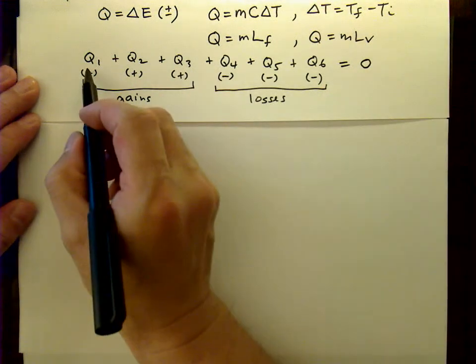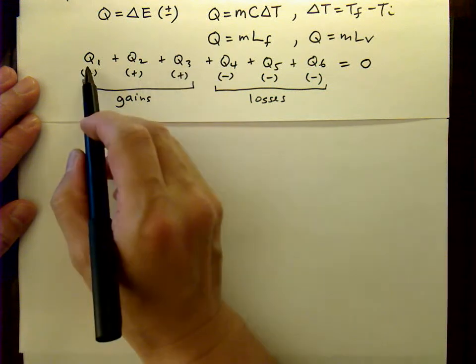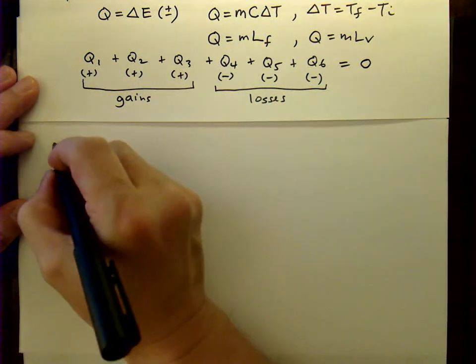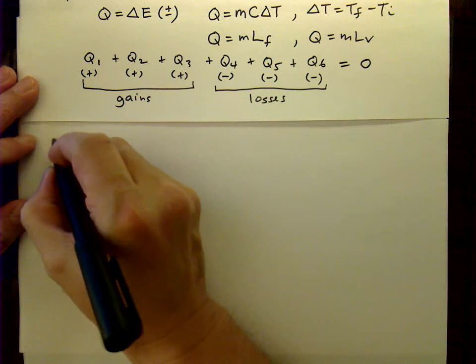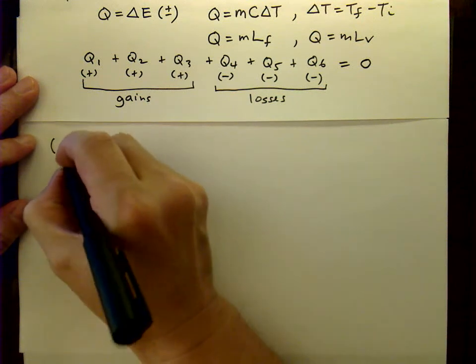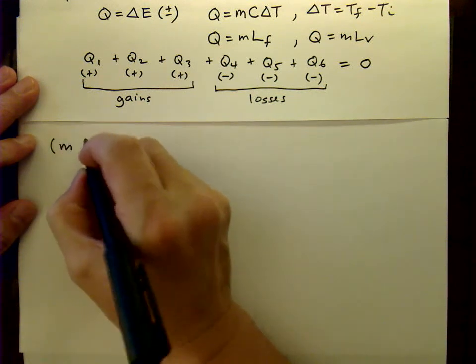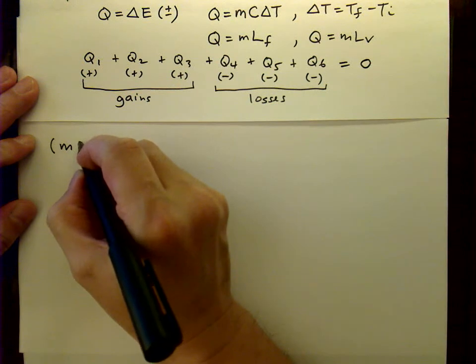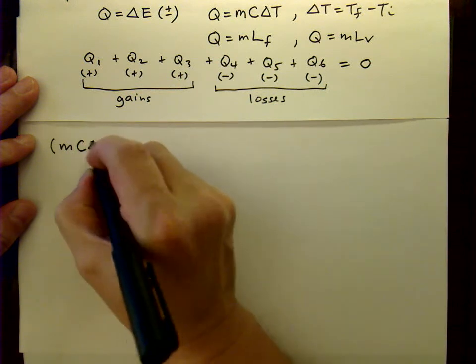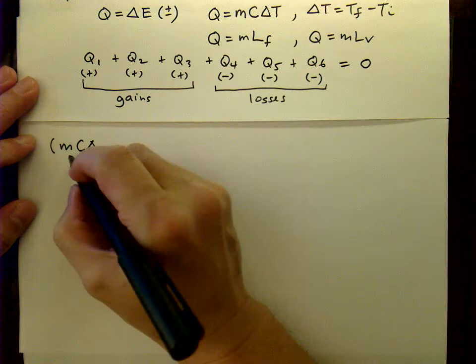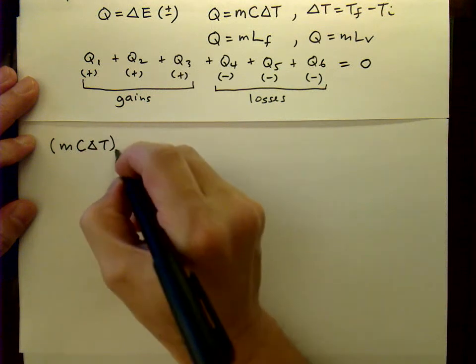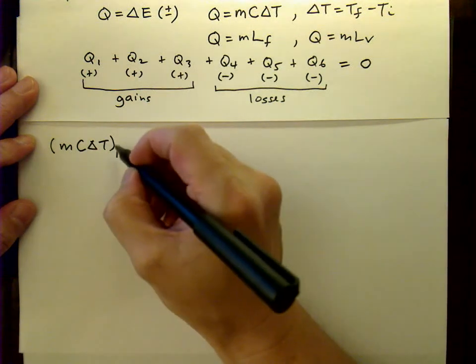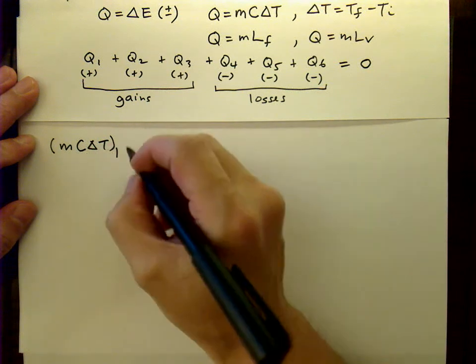We start with the ice cube side. With Q1, that's the amount of heat required to raise the ice from negative 15 degrees Celsius to zero, which is calculated by using the formula MC delta T. I'm going to use subscript 1 with brackets instead of subscripting every variable.